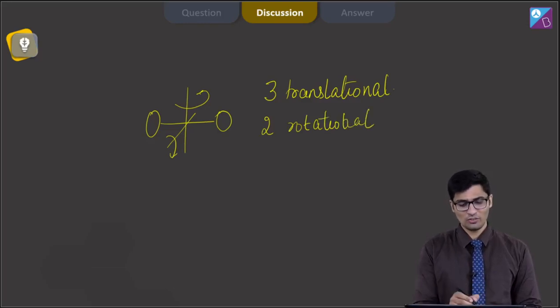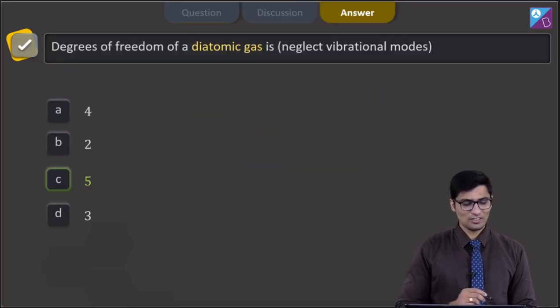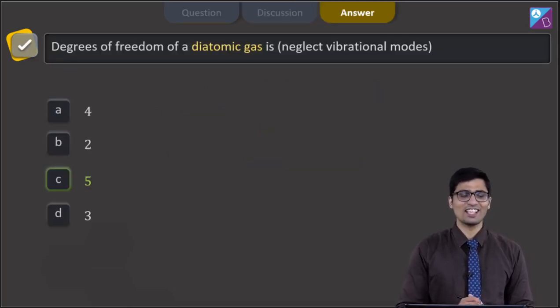So, the total number of degrees of freedom will be 3 plus 2 that is 5. These are the net degrees of freedom except the vibrational mode. And hence, for this question, the correct answer is option number C. Now, let us move to the next question.